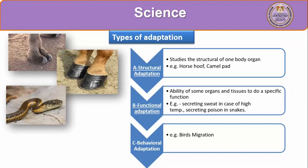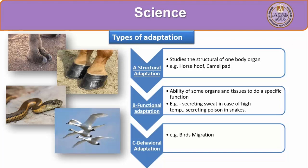The third type of adaptation is behavioral adaptation. An example is bird migration — some types of birds fly from cold polar regions, especially in winter, and move to warmer regions, then return back to their home in spring. This is behavioral adaptation, in which a living organism changes its habits or moves from home to another place for a while, then returns when conditions become suitable.